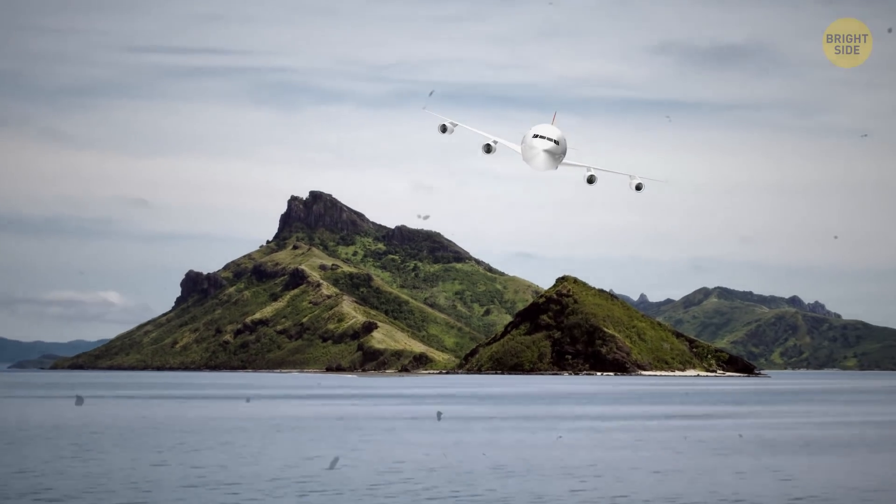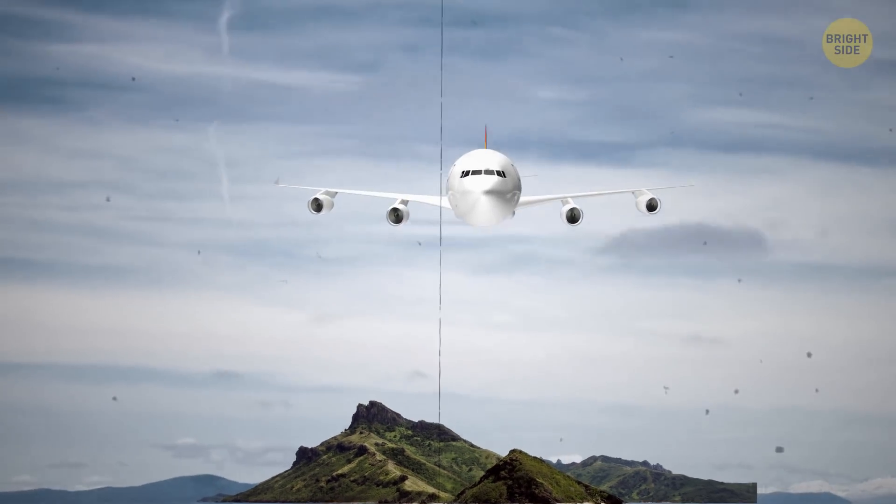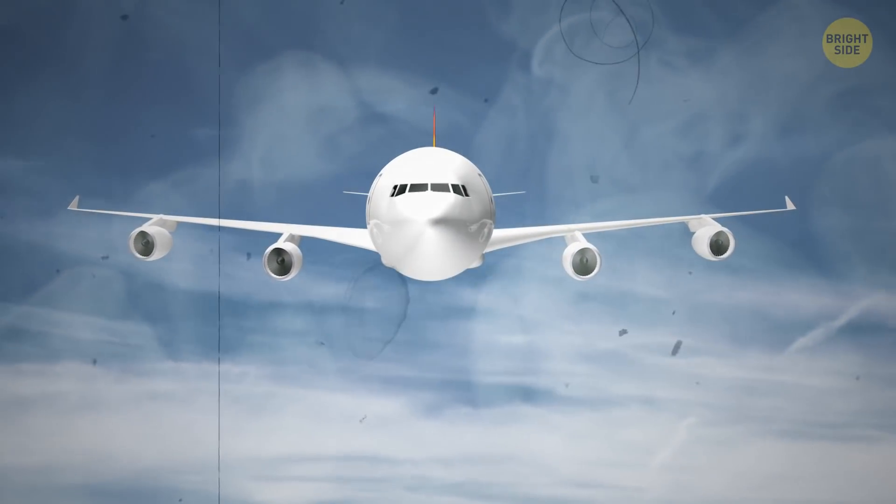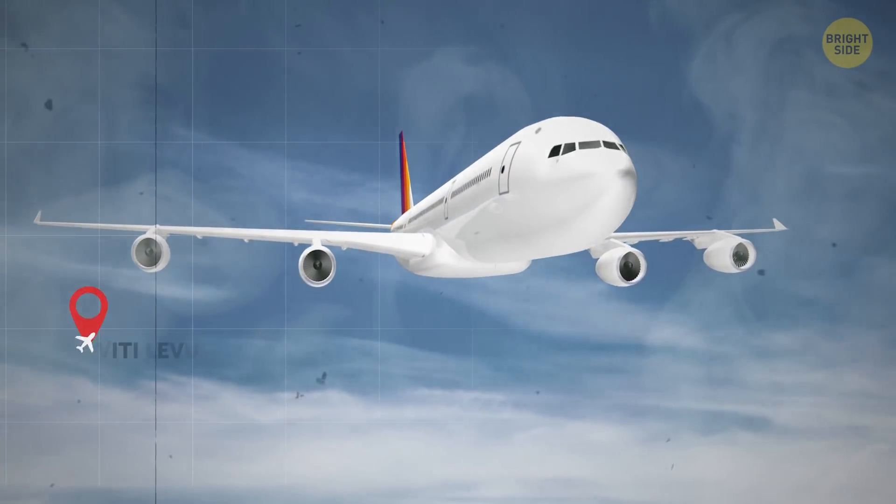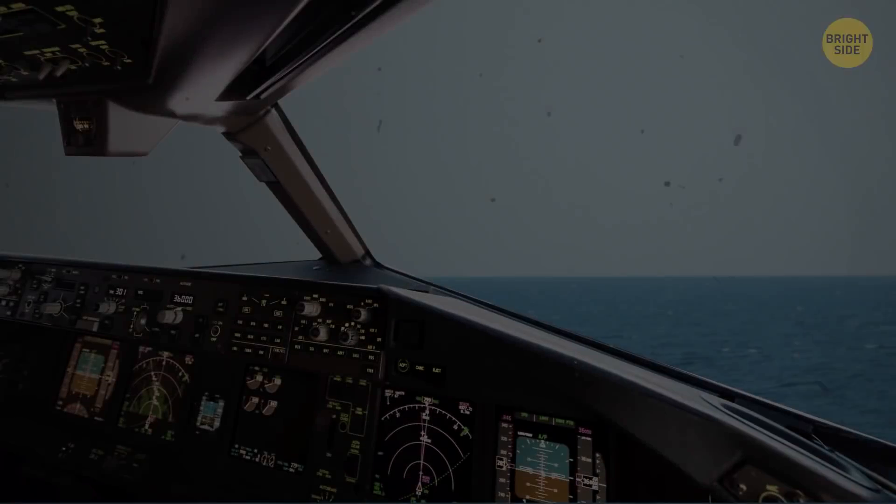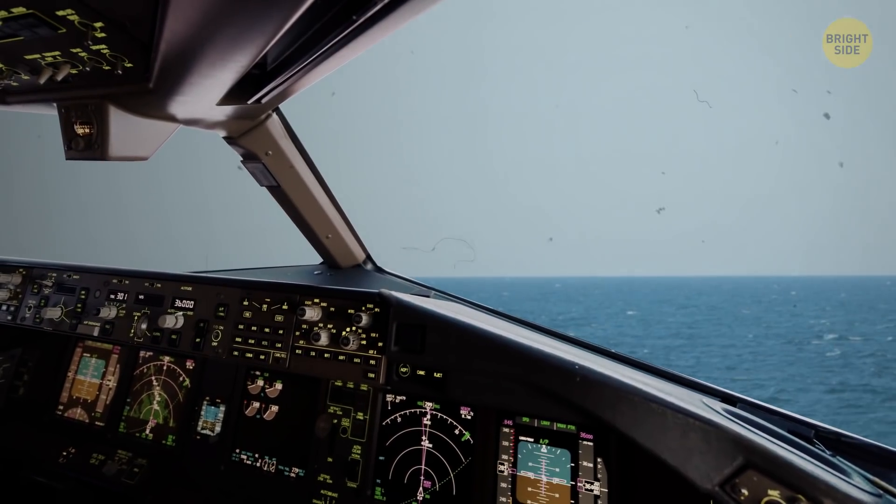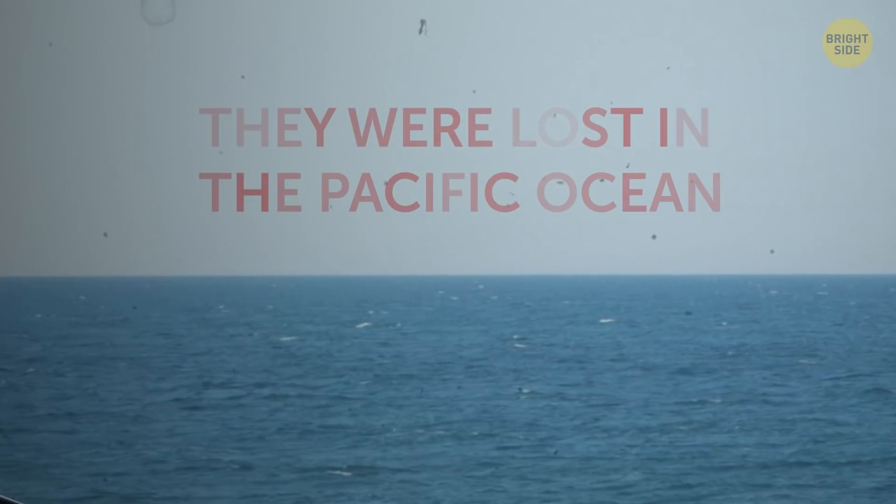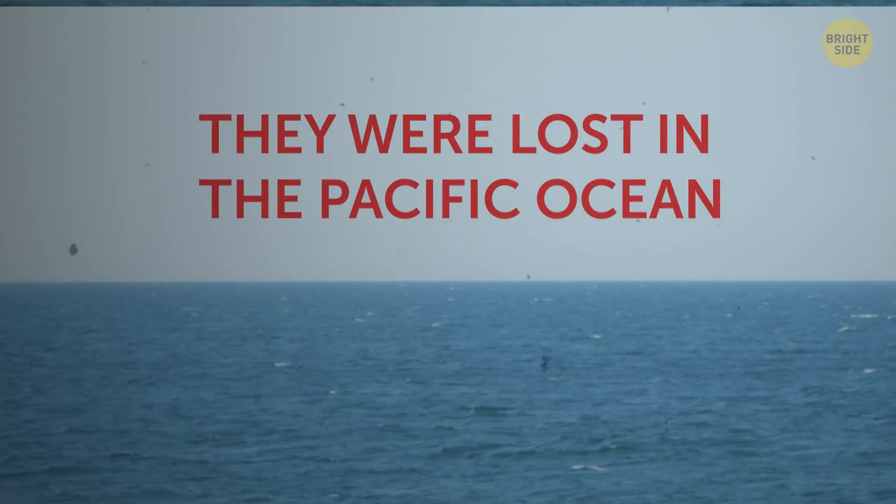It was a route they had flown before, so it didn't seem like they had any trouble reaching their destination. However, not long after the main island disappeared behind them, their plane was struck by a crosswind that knocked it off course. The islands they intended to navigate by were nowhere to be seen, and they realized they were lost in the blue expanse of the Pacific Ocean.